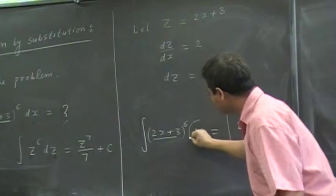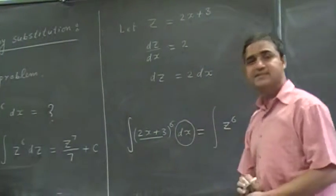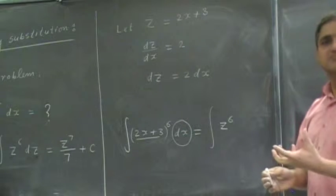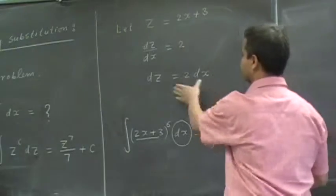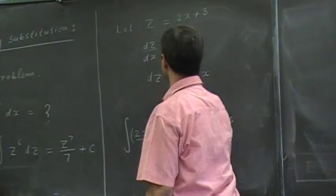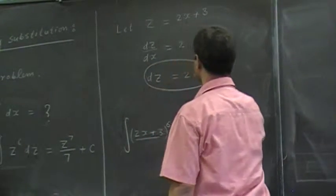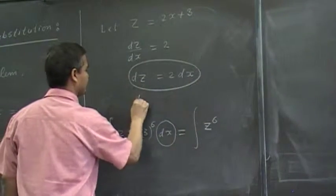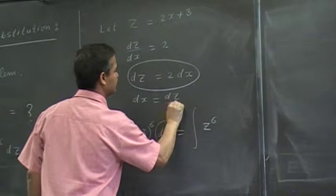Now, I want to replace dx by something like, in terms of z. So, let me go back to this relation, what is dx? From this relation, dx is dz over 2, right?